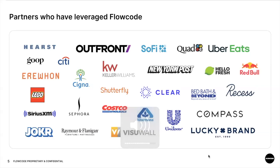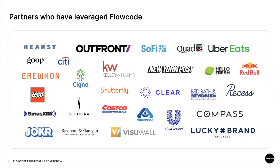Thanks Corinne. I'm going to start by explaining FlowCode at a higher level. FlowCode is a next-gen QR solution — we like to say that we are a data and attribution platform hidden behind a QR code, because there are so many benefits to your FlowCode plan that go beyond just connecting people to your digital presence. We're working with some really amazing partners like Uber Eats, Goop, Air One, and LEGO.